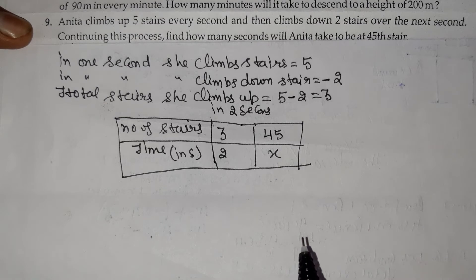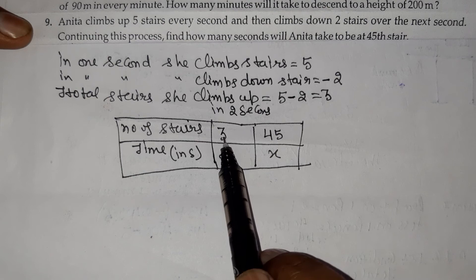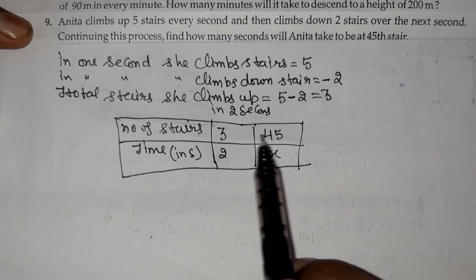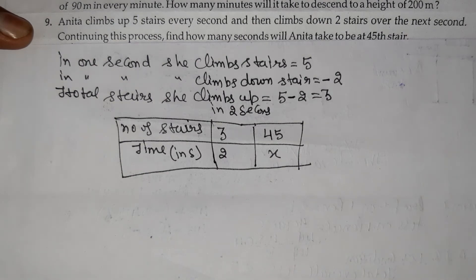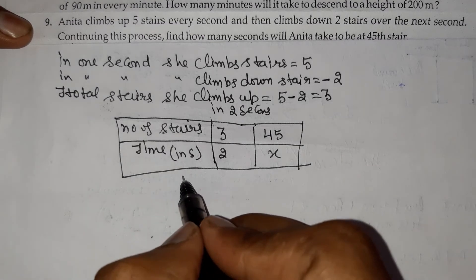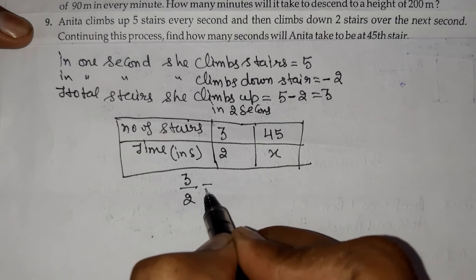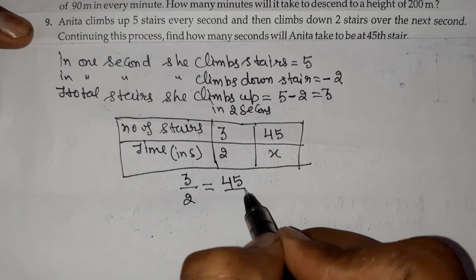For 3 stairs it takes 2 seconds, for 45 stairs it will take more time. This is directly proportional, so we write: 3 by 2 equals 45 by x.